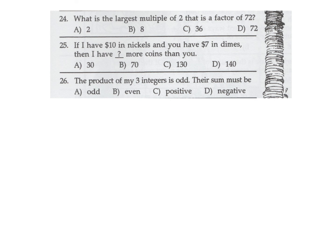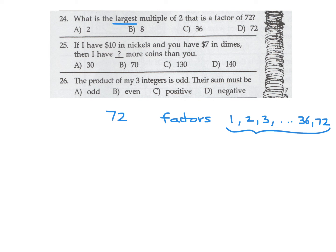What is the largest multiple of 2 that is a factor of 72? The factors of 72 go from 1 all the way up to 72. The largest factor is 72 itself. Is 72 a multiple of 2? Yes, it is. So kind of a trick question — number 24 is D.